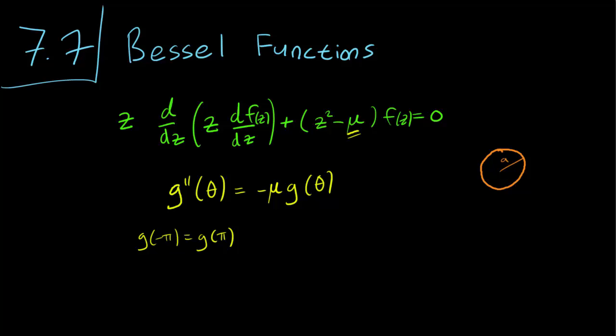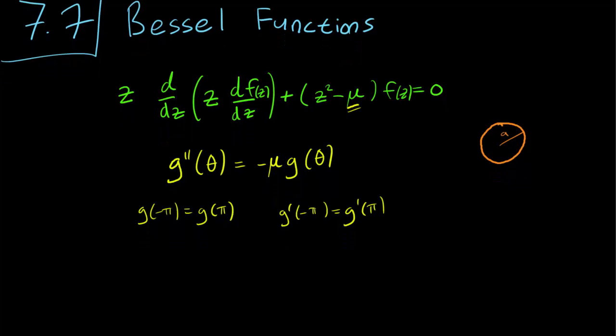We have these two boundary conditions. The other one is that g prime of minus pi equals g prime of pi, where prime refers to derivative with respect to theta. This is actually an eigenvalue problem that we have solved already in chapter 2.